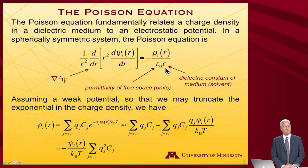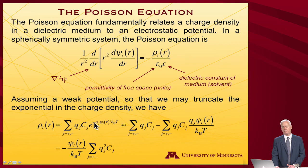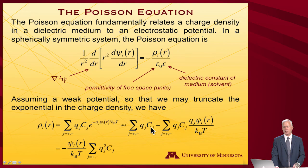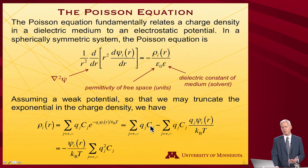For a weak electrostatic potential, we can expand the exponential: e to the minus q*psi/kT becomes approximately 1 minus q*psi/kT. The term with just 1 gives a sum of q_j times number density, which vanishes by electroneutrality — the total positive charge times its number density equals the total negative charge times its number density. This leaves an expression for charge density in terms of the electrostatic potential.